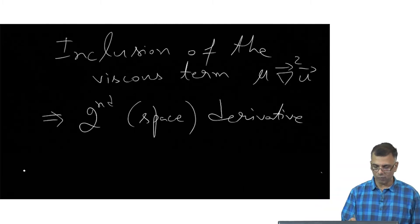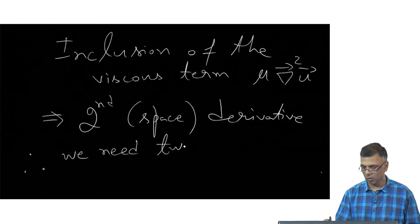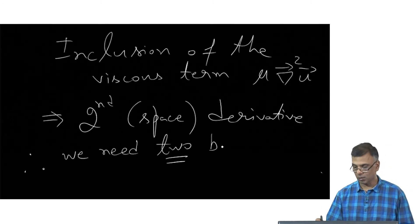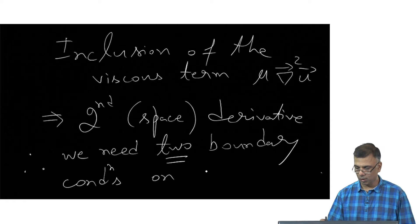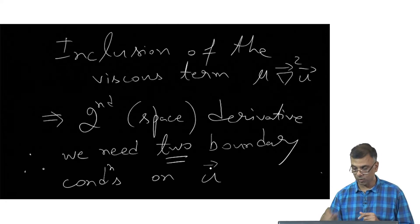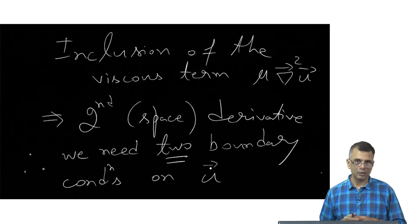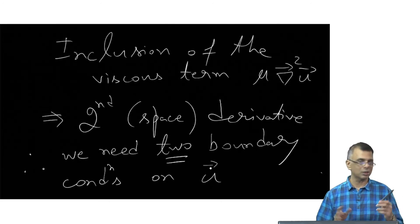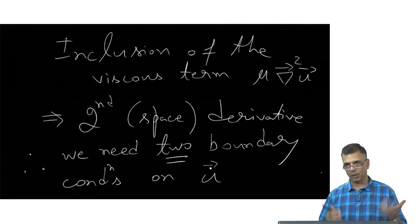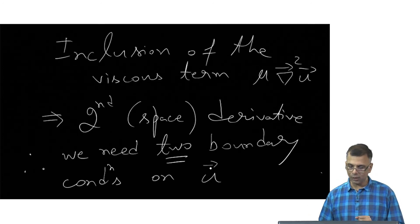Therefore, because you have second derivatives, we need two boundary conditions on the velocity — not on the velocity potential, but on the velocity. For instance, on the surface of an object, you might want to specify both the normal as well as the tangential velocity, or maybe the tangential velocity and the derivative of the normal velocity, or some mixture — maybe Dirichlet, Neumann, or a mix. Either way, you do need two boundary conditions.